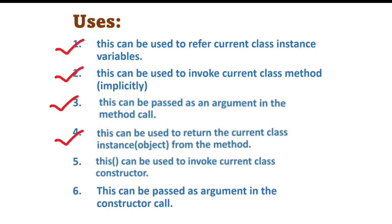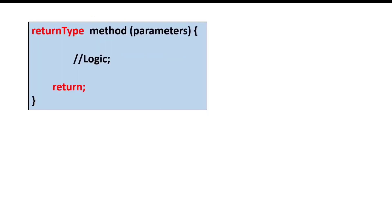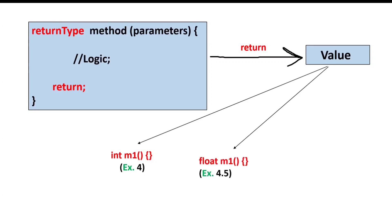In this video I am going to explain how the `this` keyword can be used to return the current class instance from the method. First let's understand what that means exactly, and then we will see how we can do it. In Java, a function or method is used to perform certain tasks, and after completion a method can return a specific value. A method can return values of different types: integer, float, or object/class type.